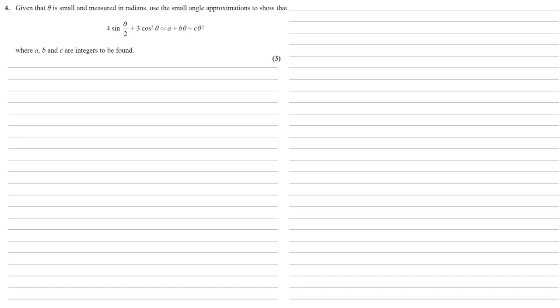Let's remind ourselves about the small angle approximations. We're dealing with sine and cosine, so sin θ is approximately θ when θ is small, and cos θ is approximately equal to 1 - θ²/2.